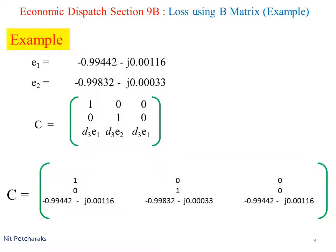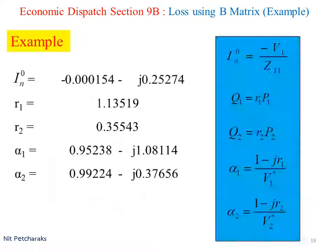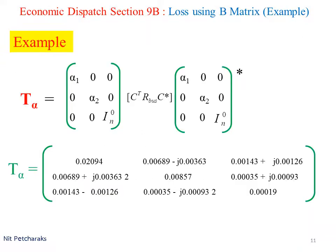Then calculate C-metrics. Calculate IN0, R1, R2, alpha1, and alpha2. After we've got alpha1, alpha2, RN0, C-metrics, and R bus.